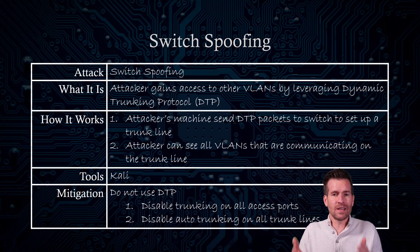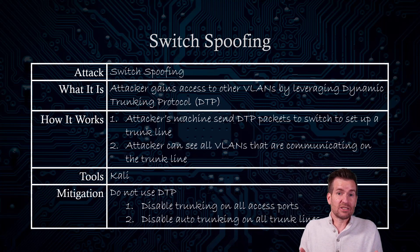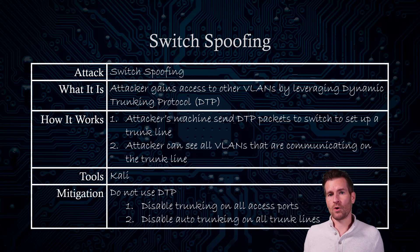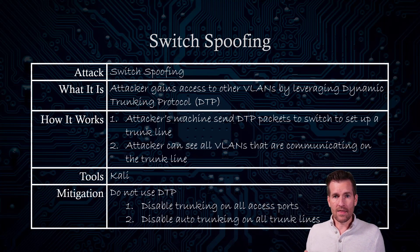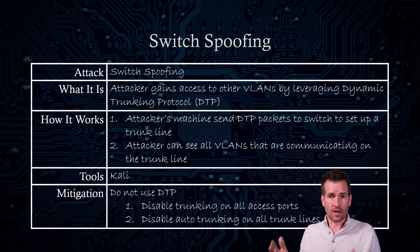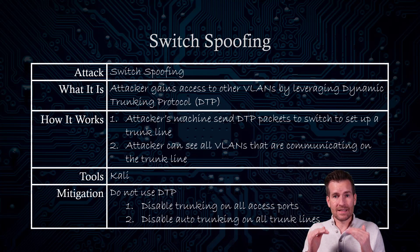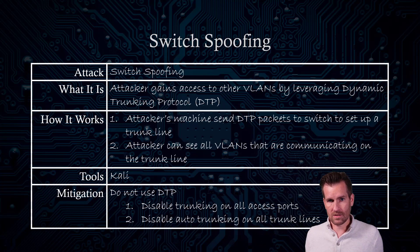So how do you mitigate against this? Well, first of all, don't use dynamic trunking protocol. On access ports, we turn trunking off completely. And then on our trunk ports, we turn off dynamic trunking protocol on those ports as well.